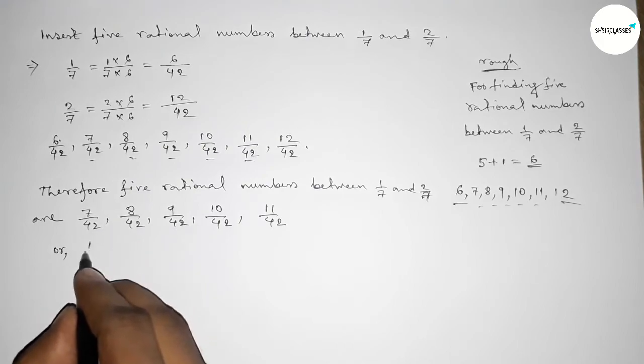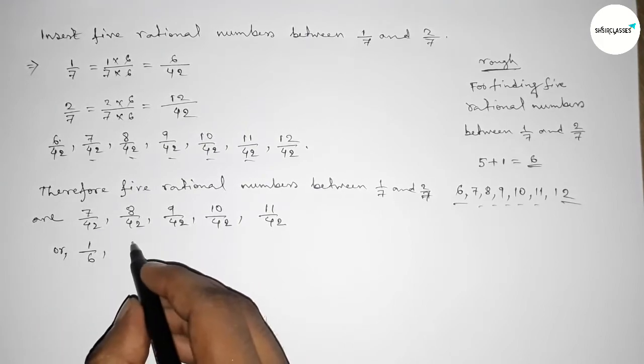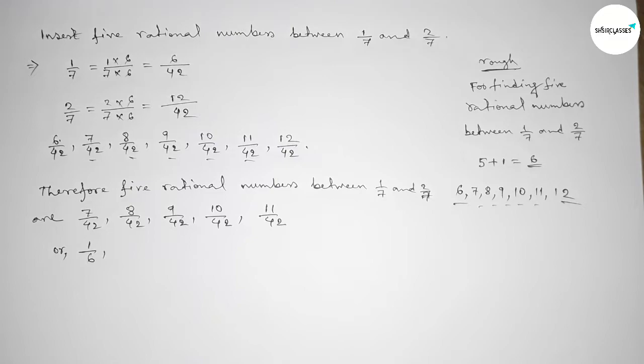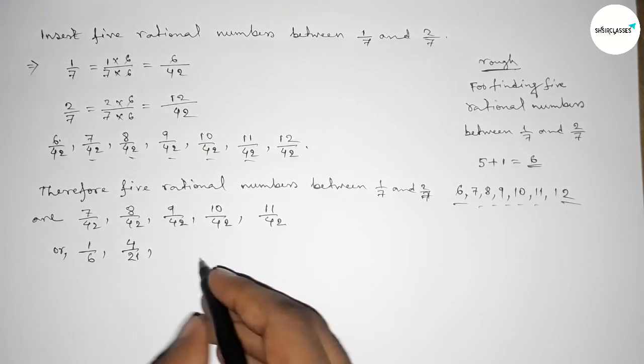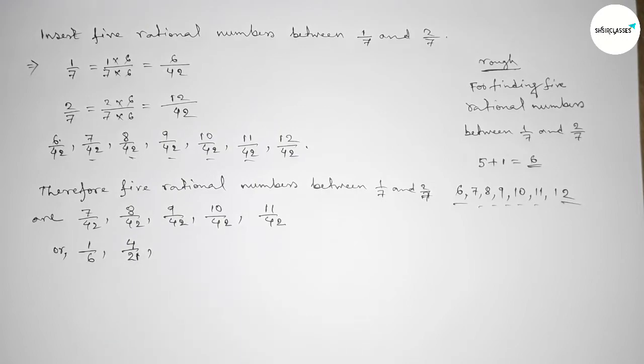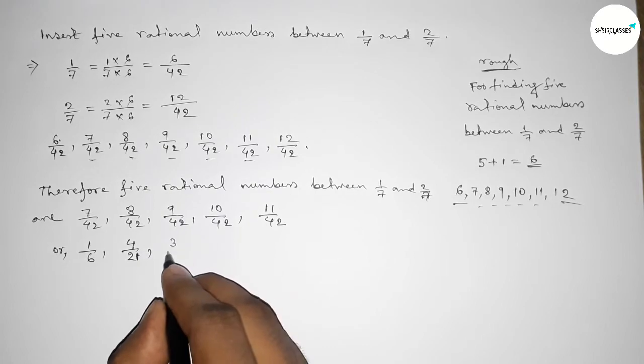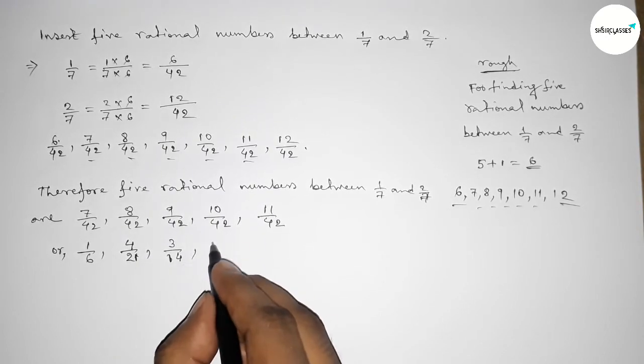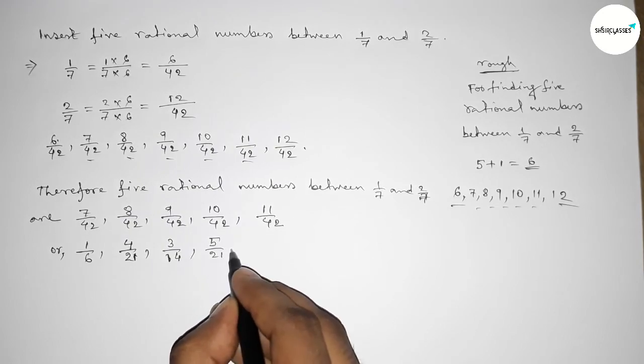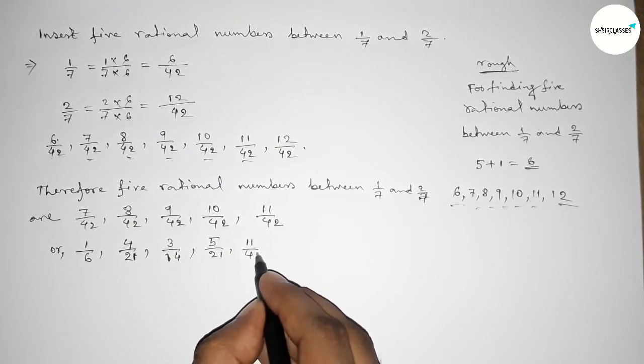Or we can write in simplified form. If you divide both by 7, this is 1/6. Now dividing by 2, then 4/21. And here if you divide both by 3, we can get 3/14, and here 5/21, and this is 11/42.